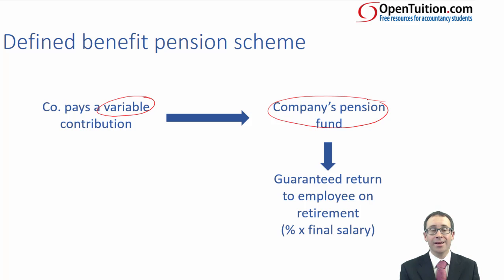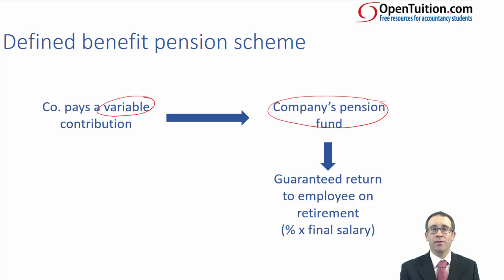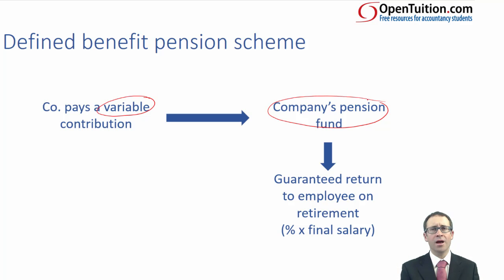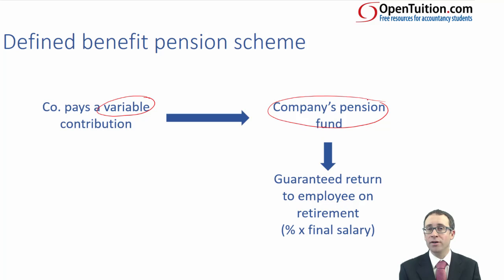When we start to look at the accounting, which we'll cover in the next video, it becomes very complex. As well as accounting for the actual contribution, you need to account for changes in the value of the assets and changes in the value of the liabilities. Do those changes go to profit or loss, or to other comprehensive income? There's a lot of variability, and we don't want that variability hitting our profits — so maybe it gets hidden away in other comprehensive income.